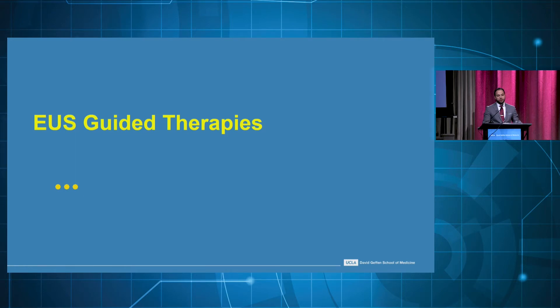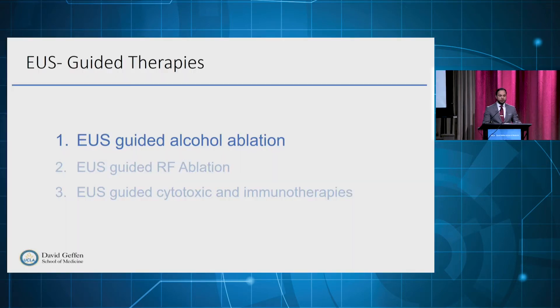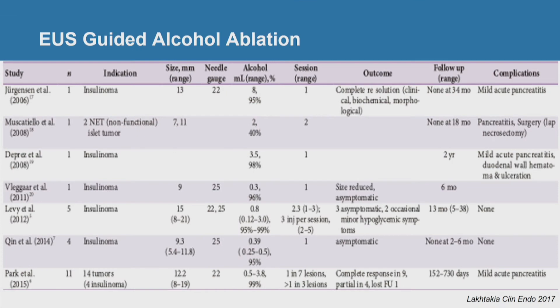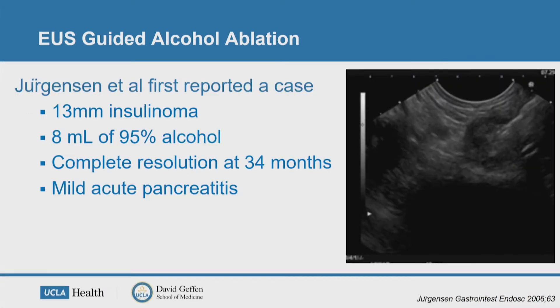Let's talk about EOS-guided therapies for pancreatic lesions. We will start with alcohol injection or ablation for pancreatic lesions. Initially, the use of ethanol or alcohol injection for the pancreas was first studied in animal studies in pigs, and subsequently studies looked at use in humans, with a lot of case reports and short-term studies reported.